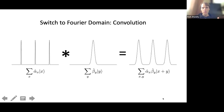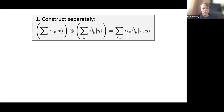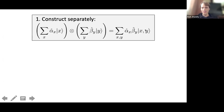This shows that if we can convolve the two states, we can multiply them. The outline: construct each state, switch to the Fourier domain via the quantum Fourier transform, then look at the joint system. The joint system looks almost like what we're aiming for — it's a sum over x, y of alpha-hat(x) times beta-hat(y) — but instead of x+y we have the pair (x, y). That's the only thing keeping us from achieving our goal.